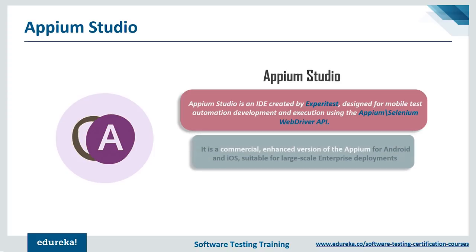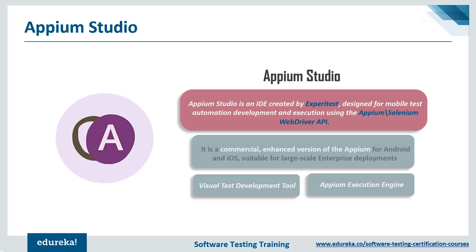Appium Studio's functionality is broken down into two main categories. The first is a visual test development tool that provides features like test recorder, device reflection, and object spy. The second is Appium's execution engine, which is especially designed for mobile and enables out-of-app testing and parallel execution. These are the key reasons why Appium Studio is much preferred over Appium, though it is a fairly new software in mobile app automation testing.